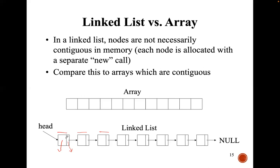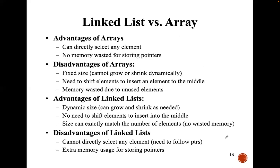The first node of the linked list will be pointed to by the head pointer, and the last node will point to the null pointer. That's how we know which node is the first and which is the last. All information we are going to have about the linked list is only the address of the first node. By using the address of the first node, we can access any node from the linked list.